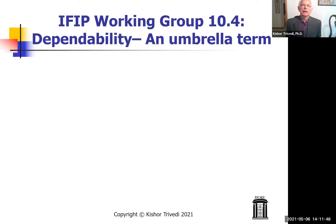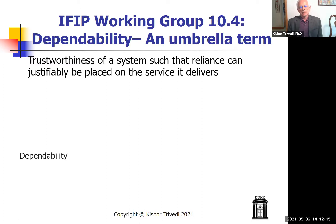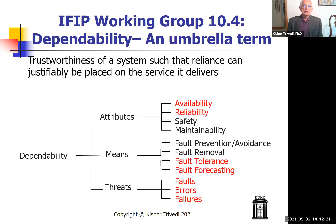I am a member of the IFIP 10.4 working group on dependable computing. An umbrella term called dependability has been used in that working group, defined as the trustworthiness of a system such that reliance can justifiably be placed on the service it delivers. A dependability tree was created with three branches and corresponding sub-branches. The first branch refers to attributes of dependability, the second to means to achieve high dependability, and the third to threats to dependability.